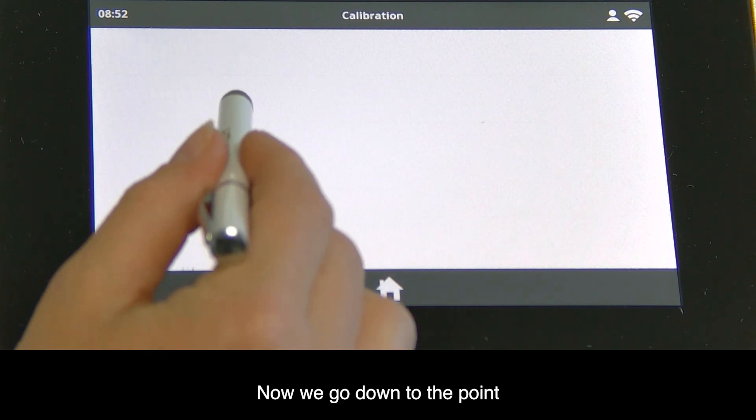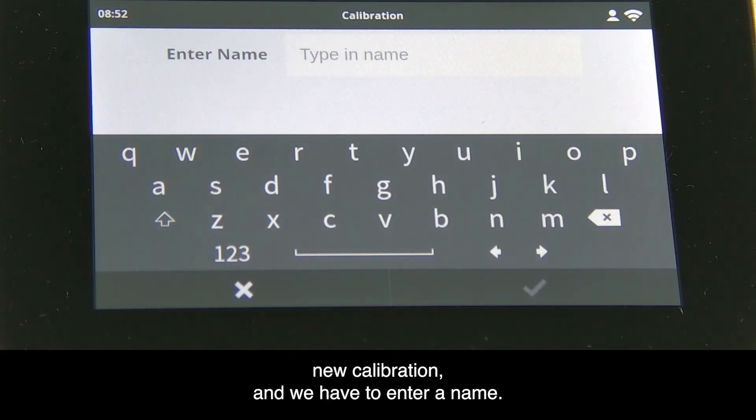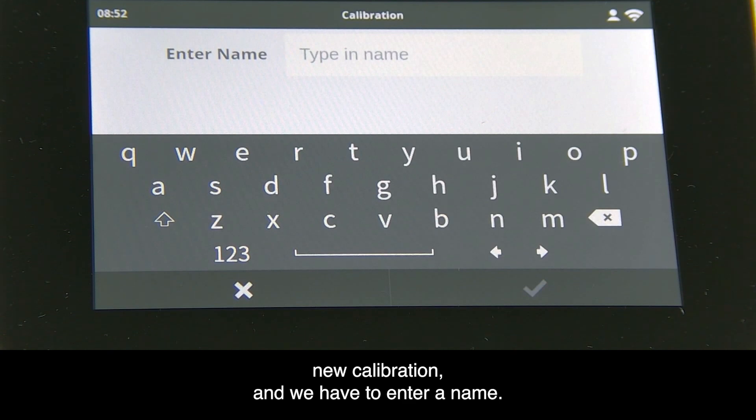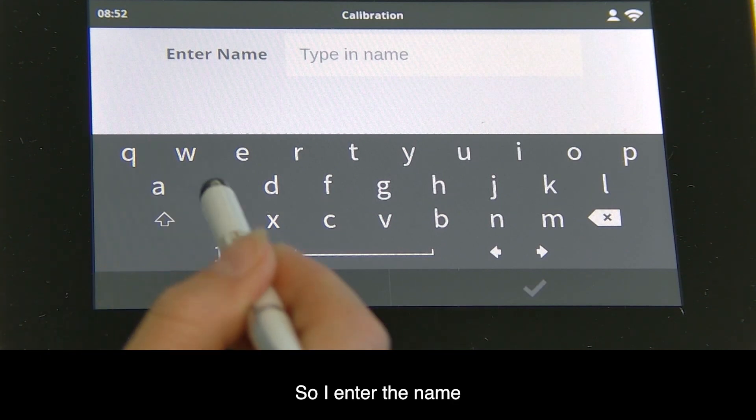Now we go to new calibration and have to enter a name. I want to show you how to set up an empirical calibration for phosphorus in liquids, so I'll enter the name.